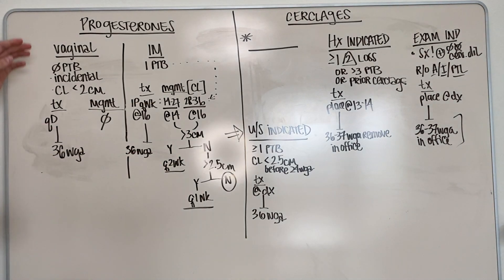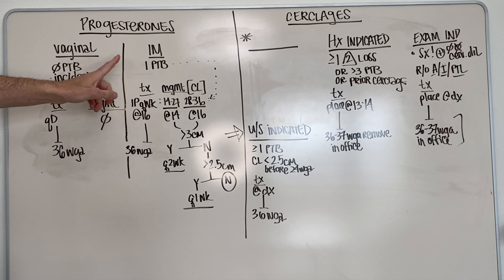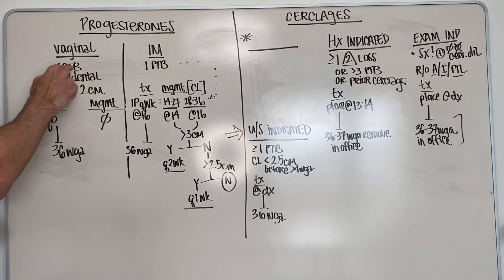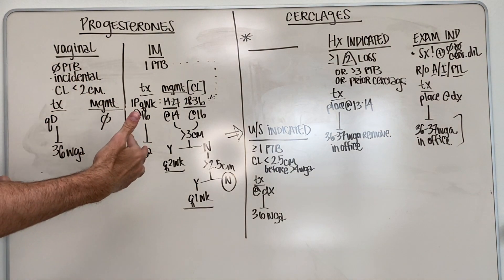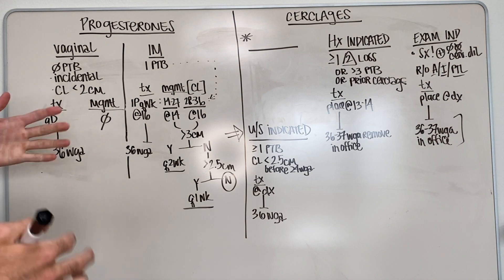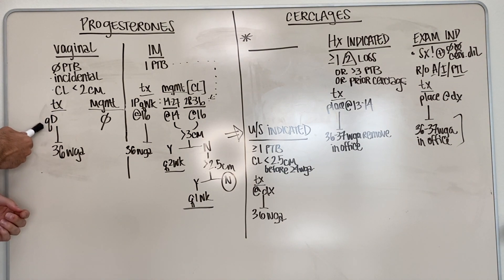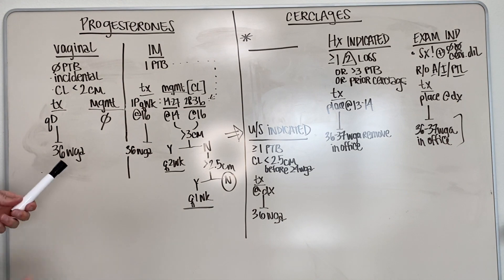Starting on the left side, I'm going to be working with vaginal versus IM progesterones. The first question you're asking these patients is whether they've had a history of a preterm birth. Don't care what gestational age, but if they did not have a history, when you do your transvaginal ultrasound for a cervical length as part of their antepartum workup, if they have a cervical length less than two centimeters, then the treatment is going to be daily vaginal progesterone which will be stopped roughly around 36 weeks.